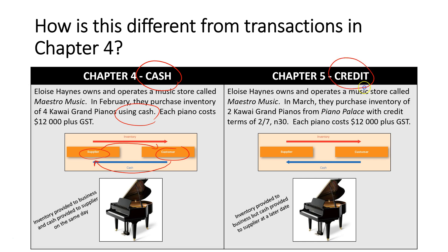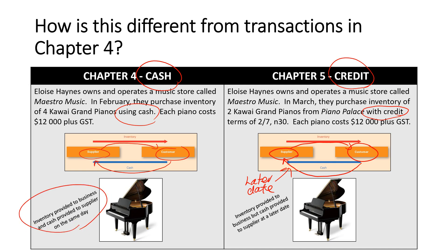In chapter 5 we're now dealing with credit transactions — the exact same scenario where we're purchasing pianos from Piano Palace but this time using credit. The supplier Piano Palace provides Maestro Music with inventory, but the transfer of cash happens at a later date. So the only difference between chapter 4 and chapter 5 is that in chapter 4 inventory and cash were exchanged at the same time, whereas in chapter 5 inventory is provided first and cash is given to the supplier later.